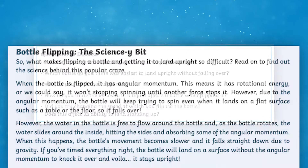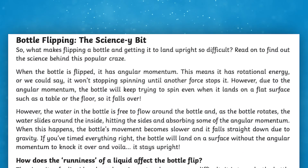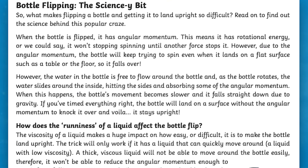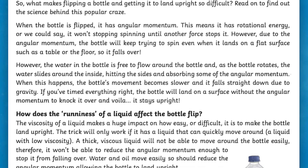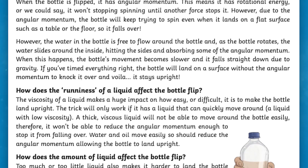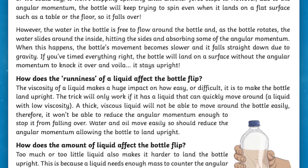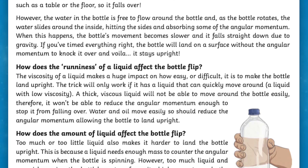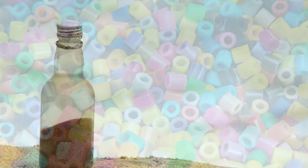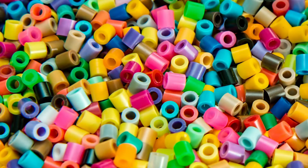Finally, there's a sciencey bit where children learn about why the runniness of a liquid has a massive effect on how easy it is to flip, as well as why the volume of a liquid makes a big difference too. As an extension, maybe children could use some different materials, such as solid materials like sand or beads.